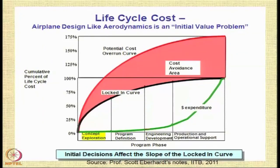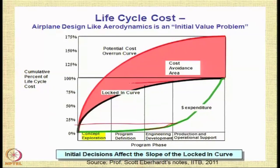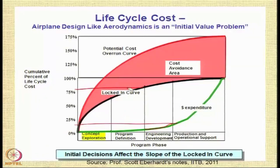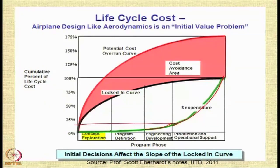In the detail design phase, you may have spent approximately 20 percent of the total project development cost. But notice that the scope for making improvements here is very small — the area representing change effect in this phase is much lesser. The largest amount of money is spent in the production and operation support phase, but if you have not done a proper job in the conceptual design phase, there can still be a huge overrun.